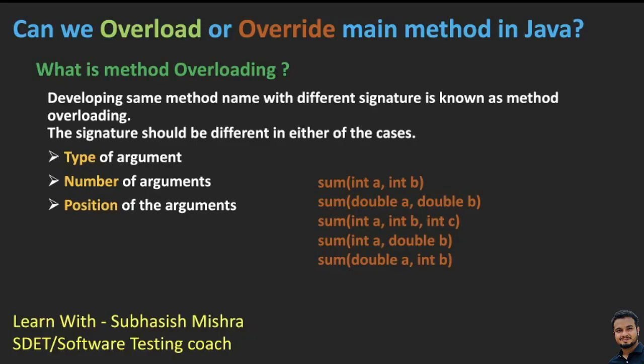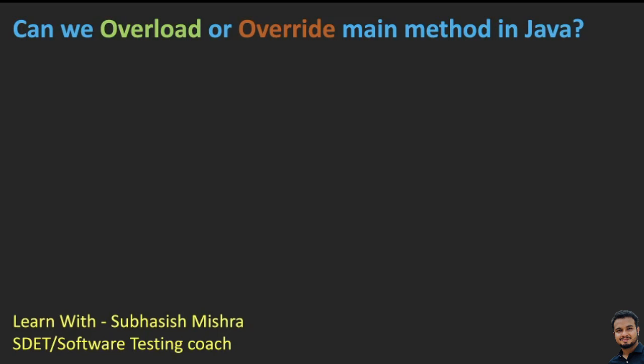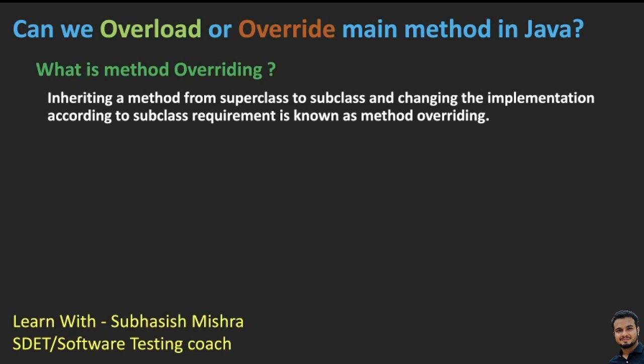Let me go back to the slides. Now we will see the next question: can we override the main method in Java? The simple answer is no, you cannot override the main method in Java. Why? Because you cannot override static methods, and public static void main is a static method. That is why we cannot override it. The reason is: inheriting a method from a superclass to a subclass and changing the implementation according to the subclass requirement is known as method overriding.